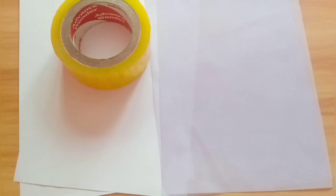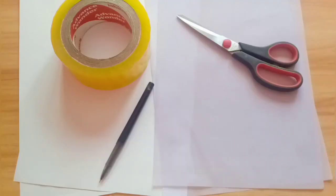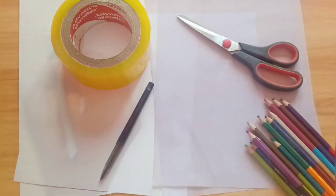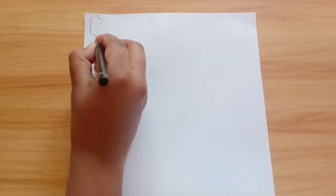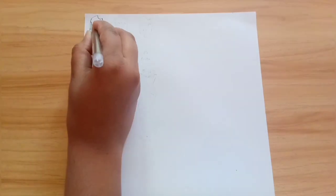The first DIY is for stickers. For this you'll need A4 size paper, parchment paper or sticker sheet, clear tape, scissors, paint, and some pencil colors or brush pens to decorate. First, take the A4 size paper and start drawing your favorite doodles on it.